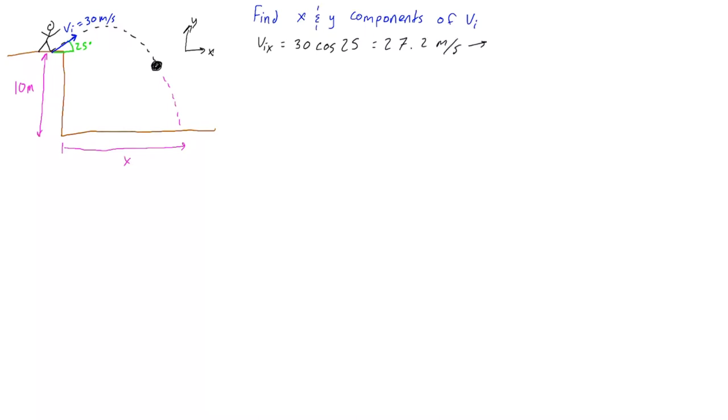That is the initial horizontal velocity component. V_iy is the same thing, it's just 30 times the sine of 25, and that's going to give us 12.7 meters per second up.